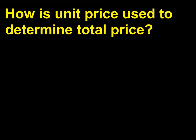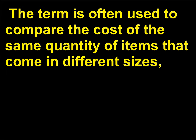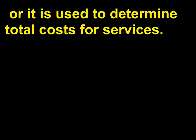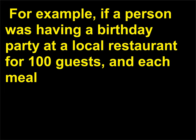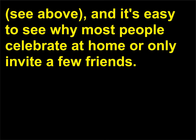How is unit price used to determine total price? The unit price is simply the cost for each item, or unit. The term is often used to compare the cost of the same quantity of items that come in different sizes. For example, if a person was having a birthday party at a local restaurant for 100 guests, the total cost of the celebration would be $7.50 x 100 equals $750. Add a tip to the total, and it's easy to see why most people celebrate at home or only invite a few friends.